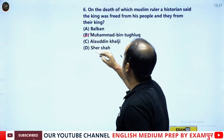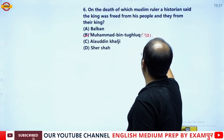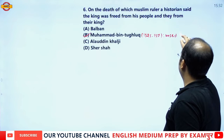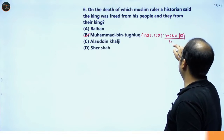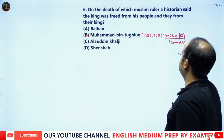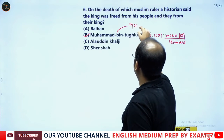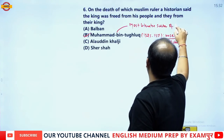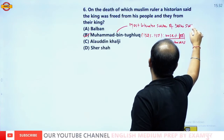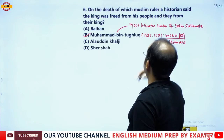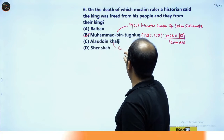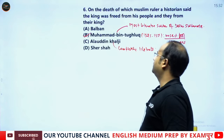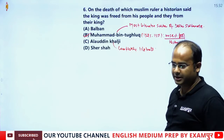This statement was given for Muhammad bin Tughlaq (1325 to 1351 AD), because he was called the 'wisest fool' king by historians. Although he was the most literate Sultan of the Delhi Sultanate, Alauddin Khilji was completely illiterate. Therefore, the correct answer is option B, Muhammad bin Tughlaq.